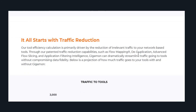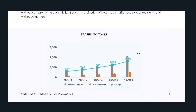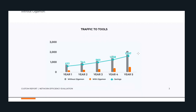We also show you up front this nice graph, which is how much irrelevant traffic can be filtered out to your tool. In gray we show you without Gigamon, with orange this is with Gigamon traffic reduction capabilities, and in blue we show you what the specific number is. This is how much irrelevant traffic would get filtered out, and we show this over five years.